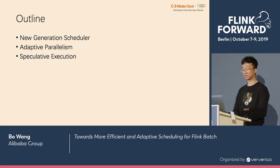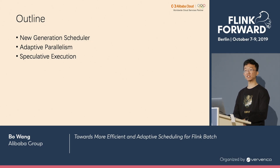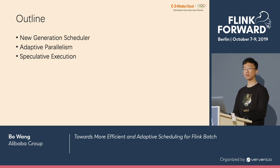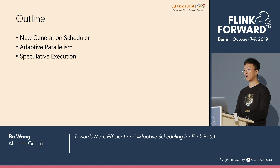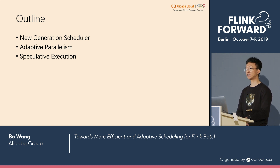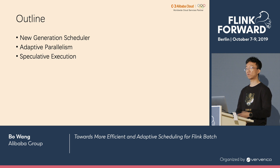My talk consists of three parts. The first part is a brief introduction of the new generation scheduler. The second part is adaptive parallelism, which aims to handle the problem caused by factors such as data size mismatch and data skew. The third part is speculative execution, which aims to optimize performance degradation due to environment factors such as hardware errors, accidental IO bursts, or CPU bursts.